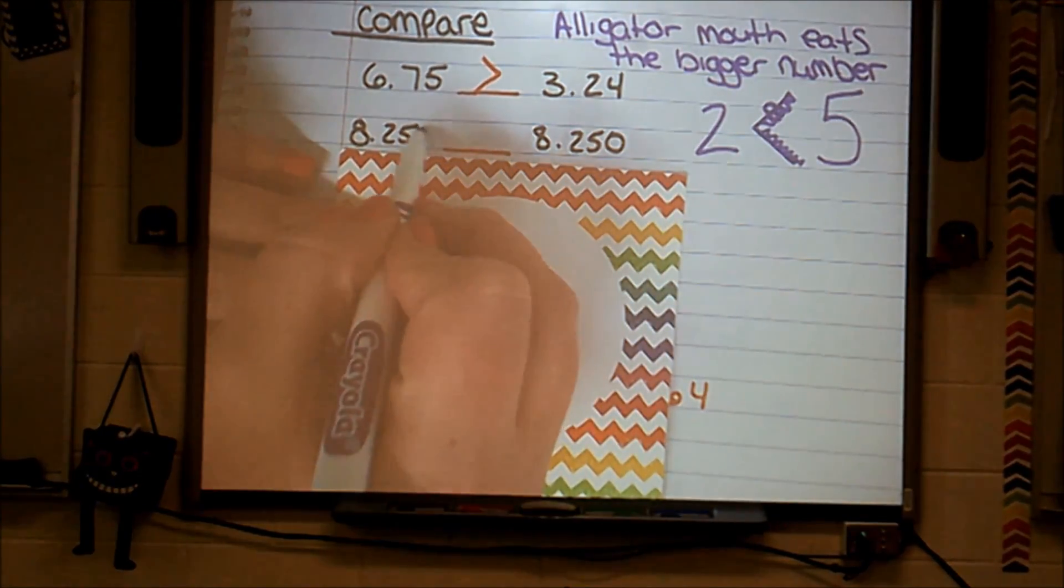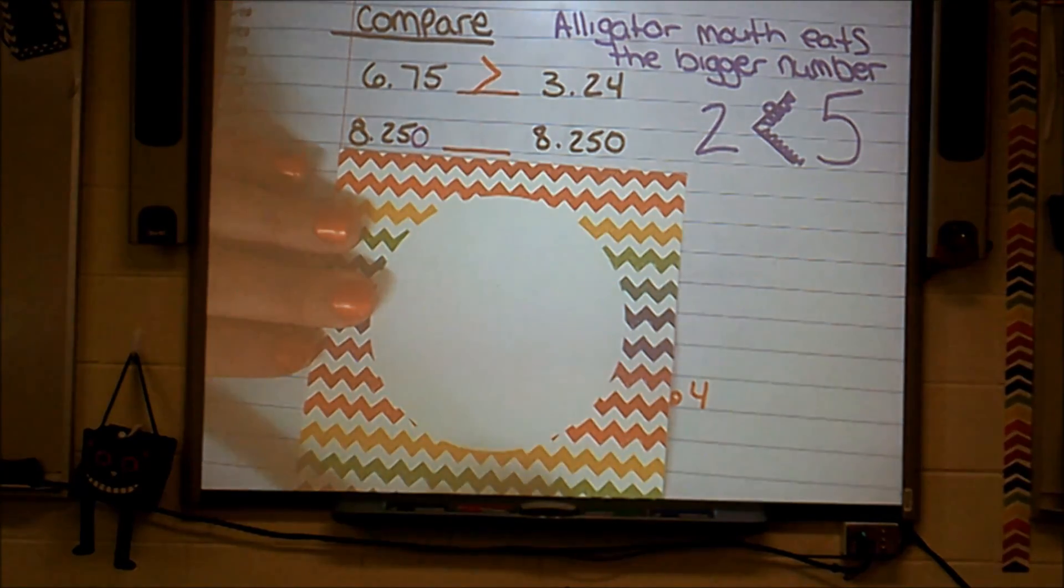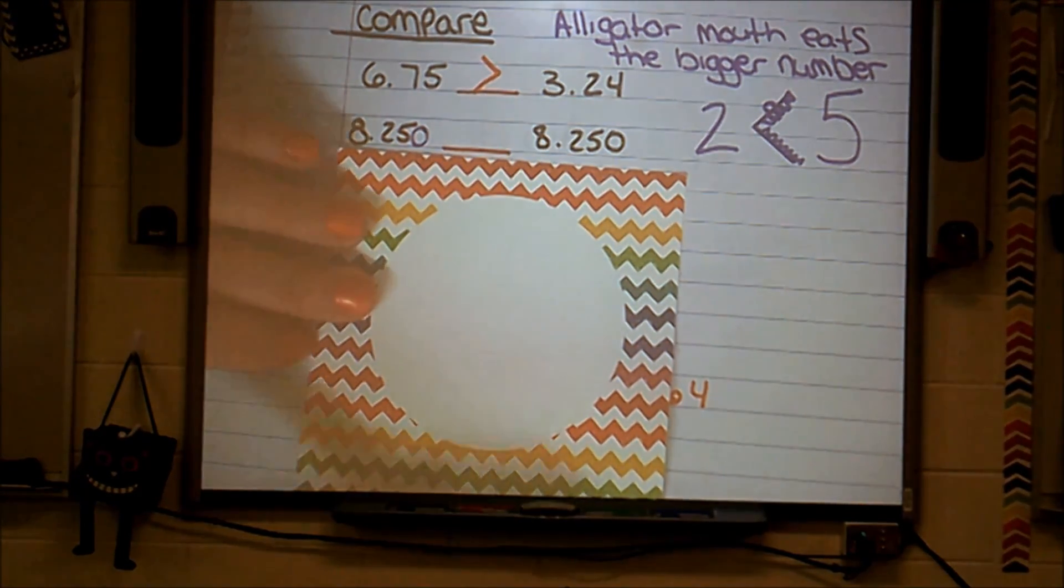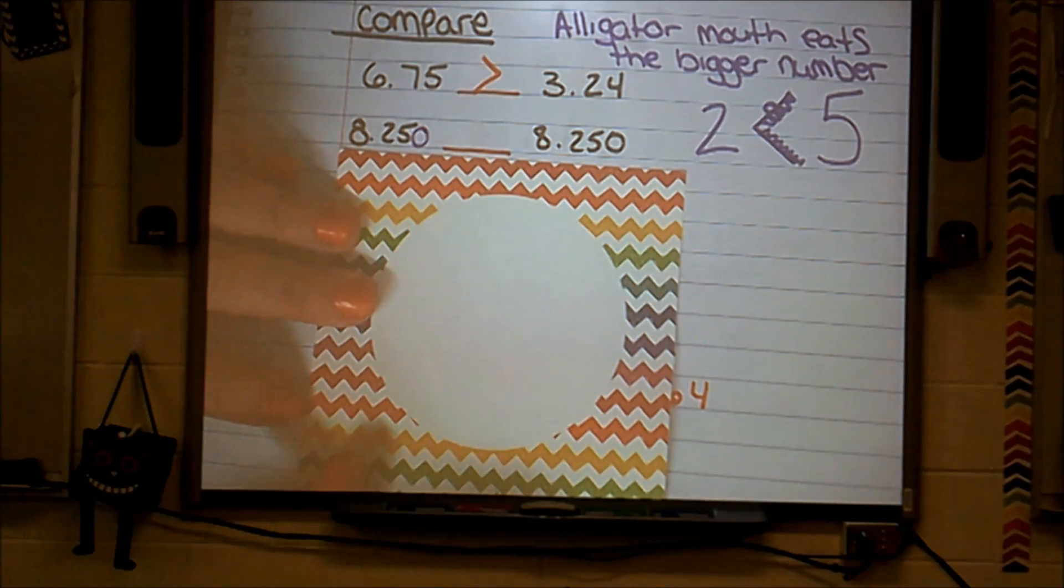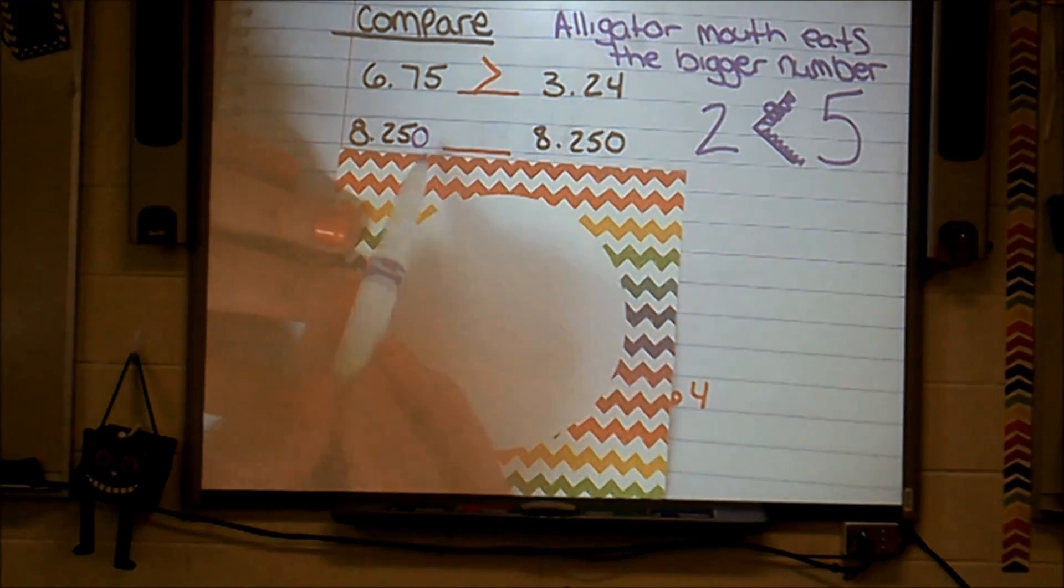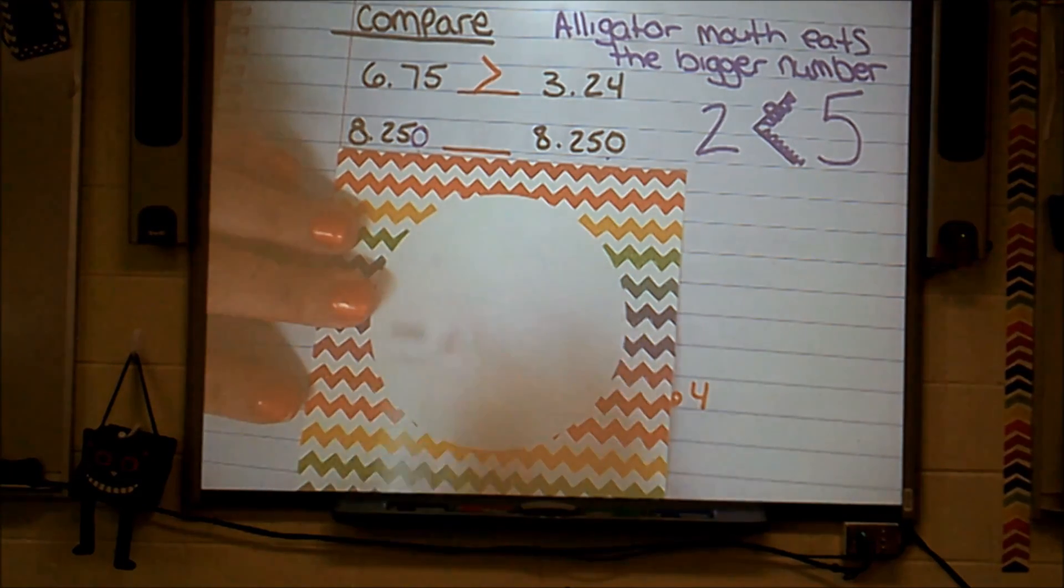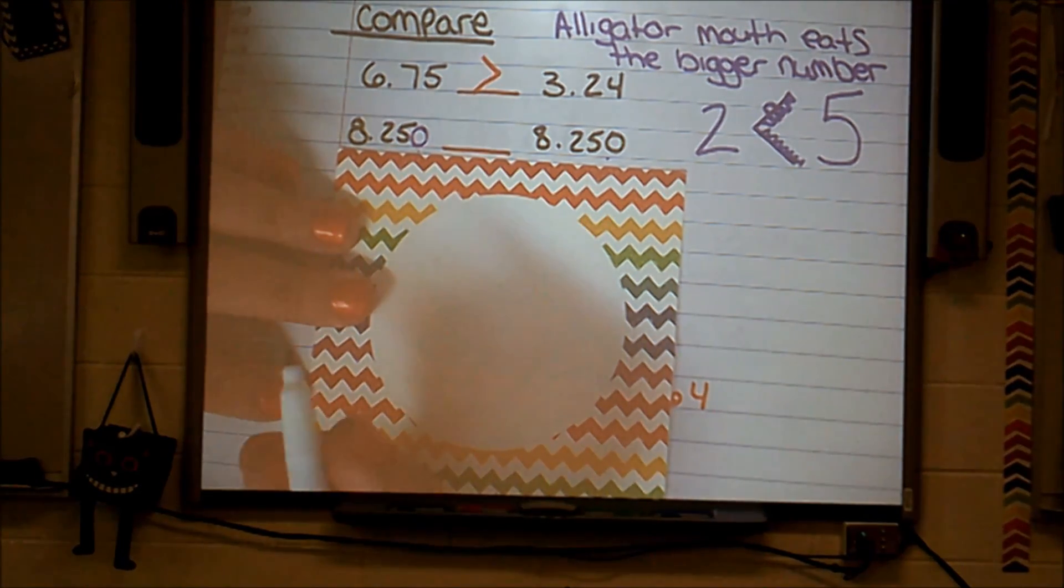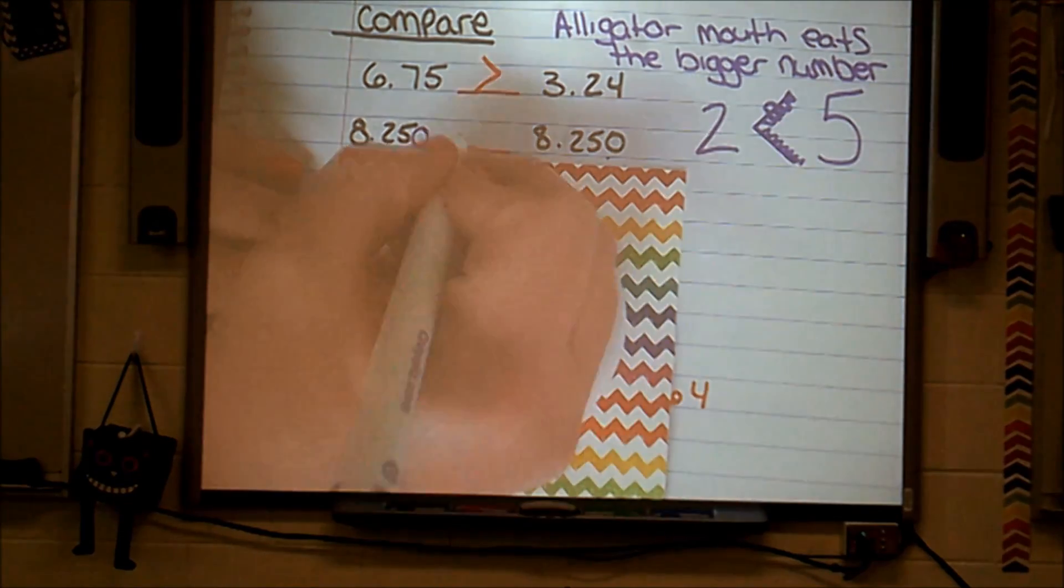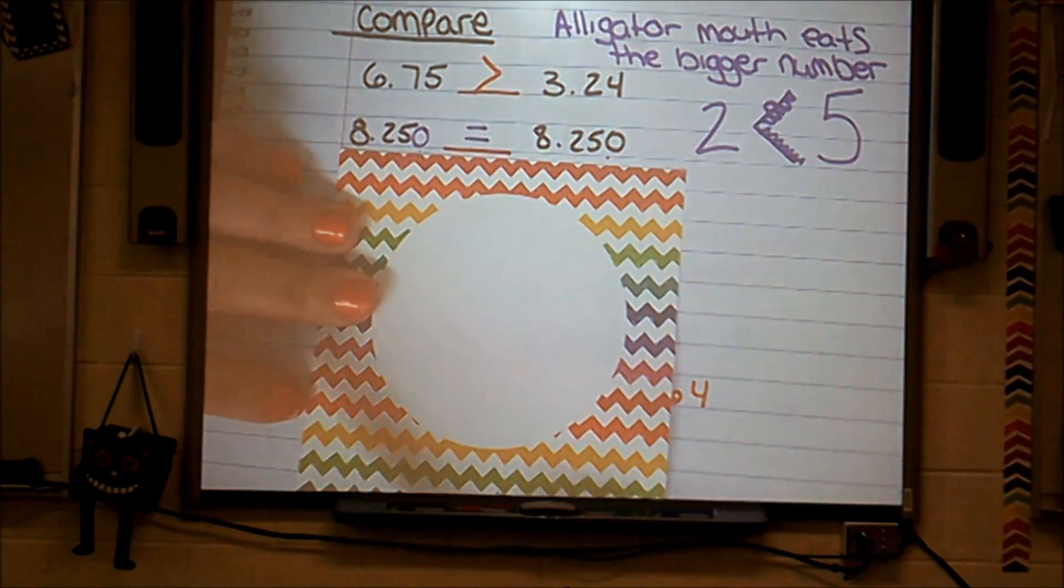So because of that, I can add a zero there and it makes no difference. It is still $8.25. So if I add that zero there, now they both have zeros there, and that's the end of the number. That being said, these two numbers are equal.